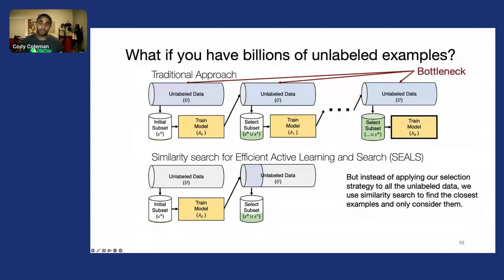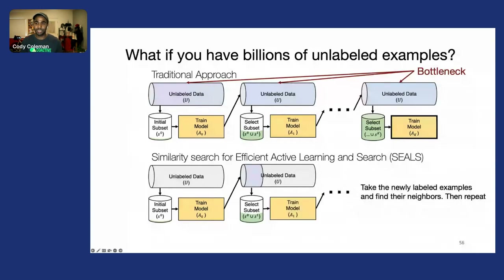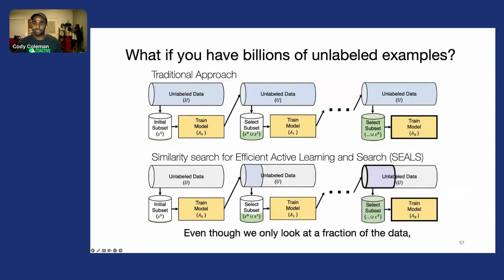We repeat this process—taking those newly labeled examples, finding their nearest neighbors to expand the candidate pool in the unlabeled data, and repeating. At the end, we've only looked at a very small fraction of the unlabeled data.